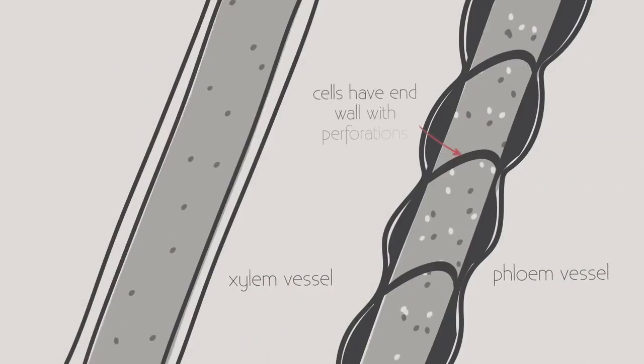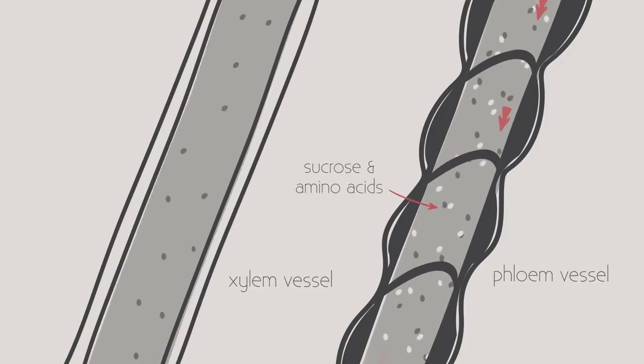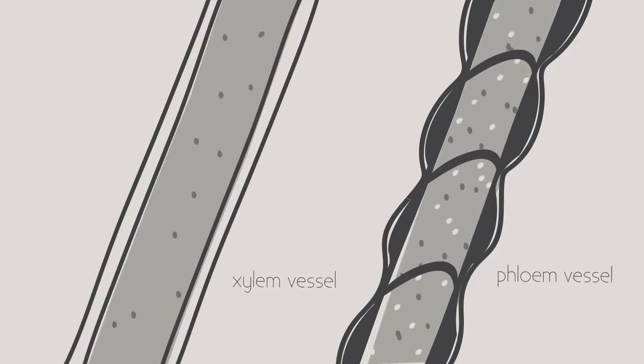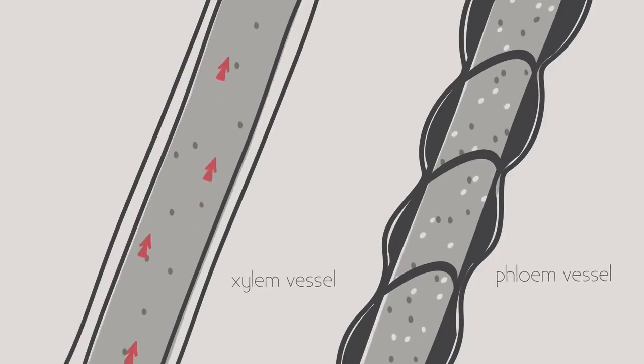The phloem vessels are made up of living cells. They transport sucrose and amino acids up and down the plant depending upon where they are needed, whereas in the xylem the movement is just one way from the roots up to the leaves.